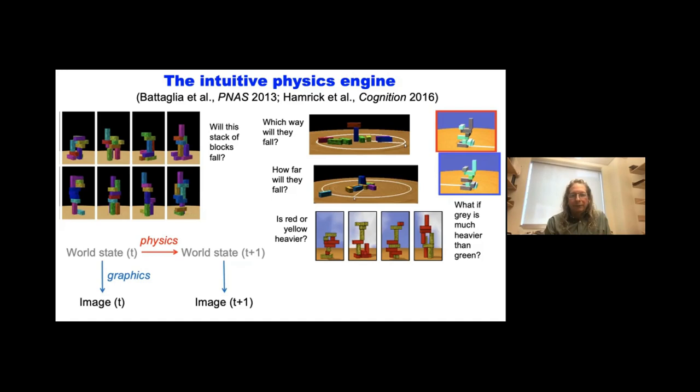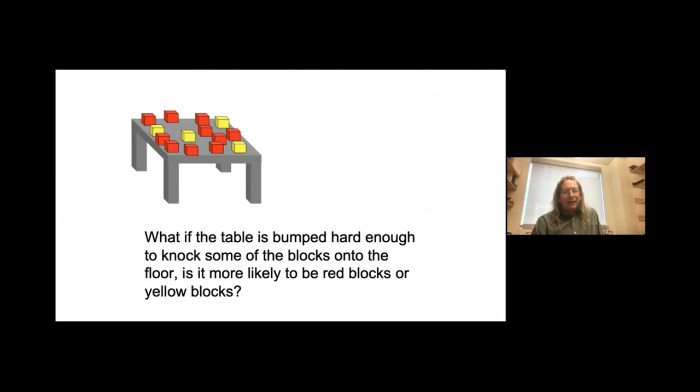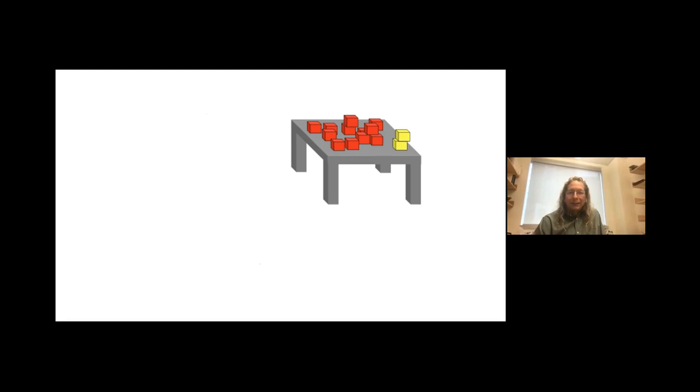We've used this kind of approach to capture not just judgments about how stable things are, but a whole number of other different questions that you can formulate as queries in your probabilistic programming language. Basically any proposition that can be evaluated on the underlying scene state can be a judgment that the system can give you, like which way will the blocks fall or how far will they fall? Or suppose I condition on some other information, like the fact that the gray material is much heavier than the green stuff.